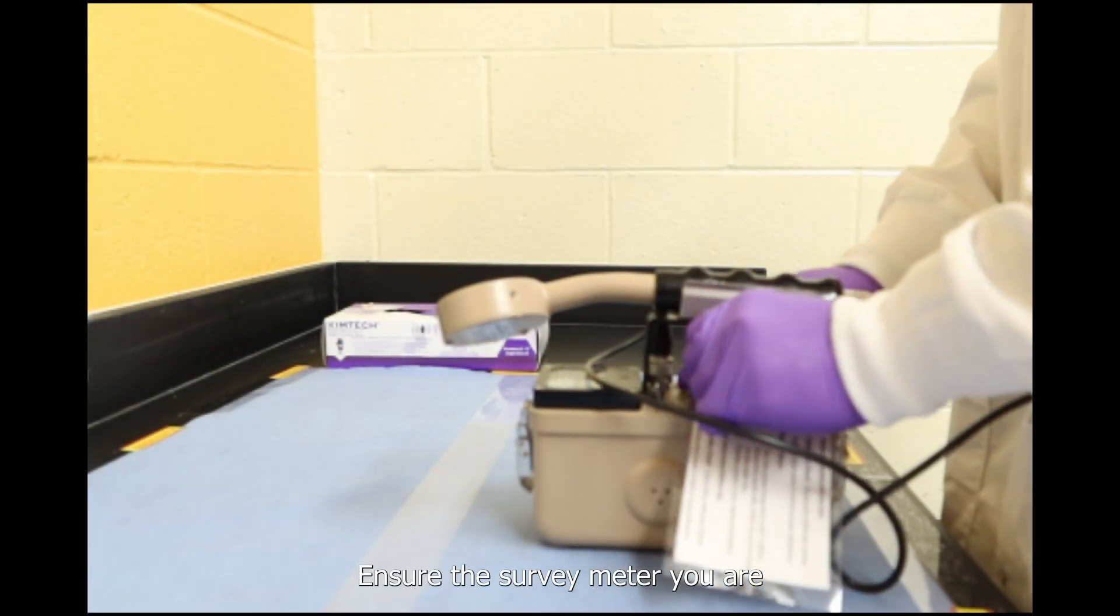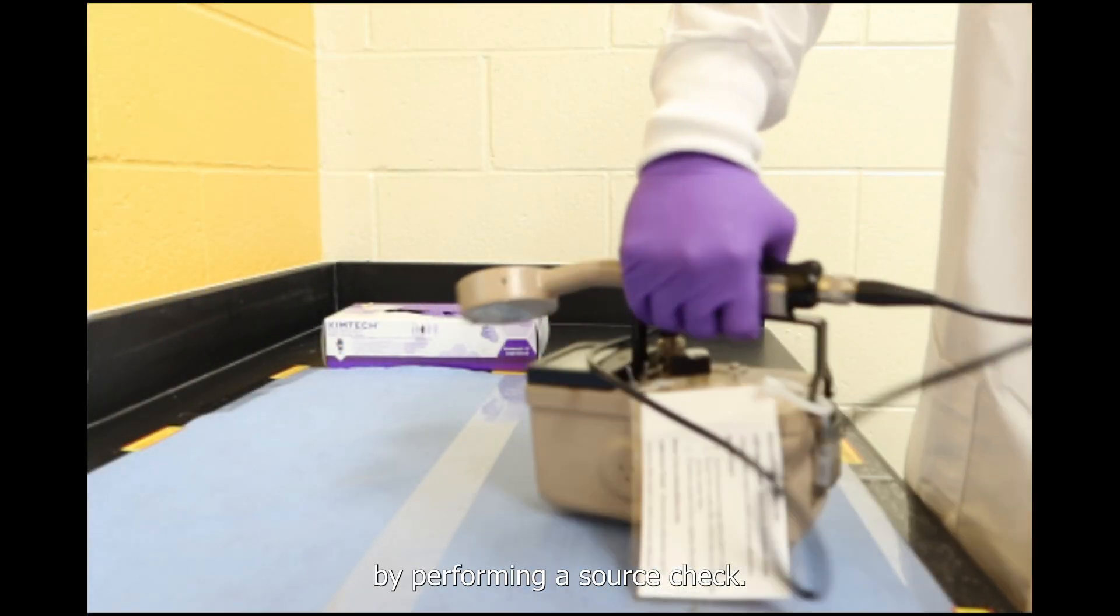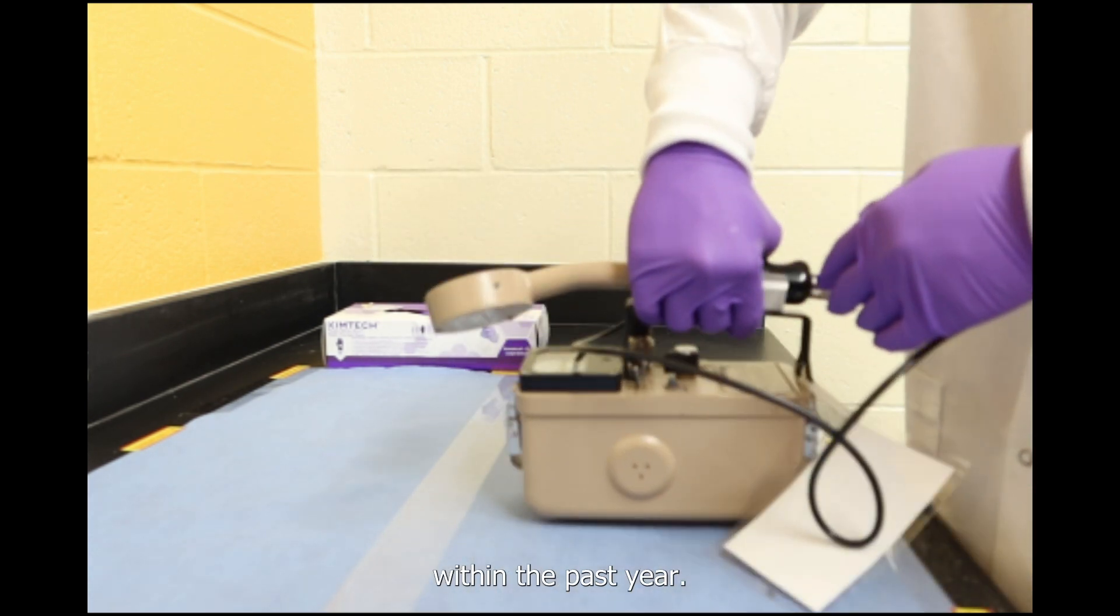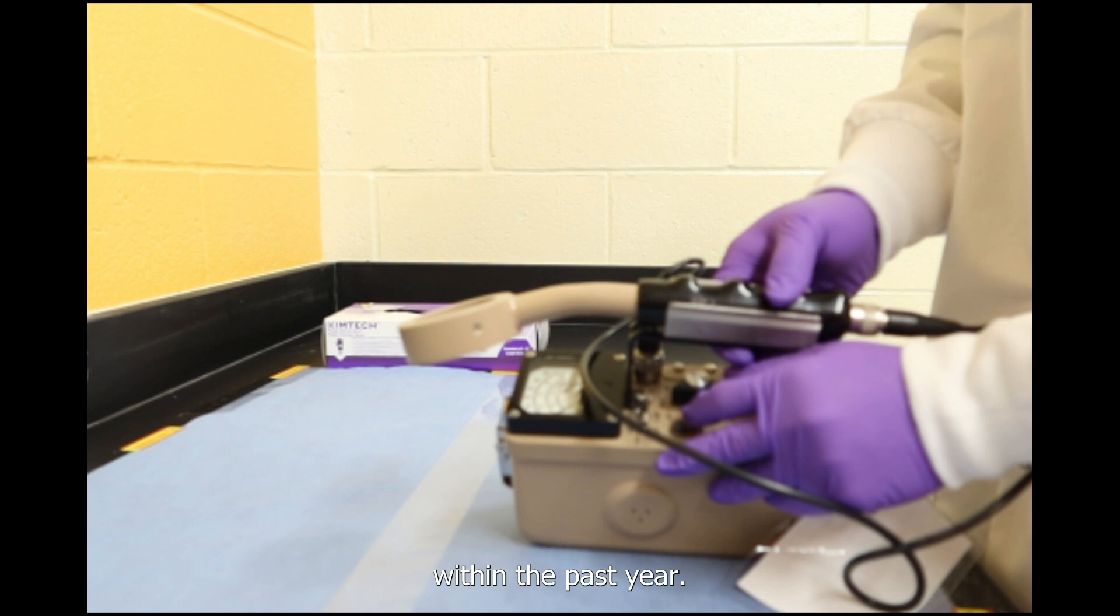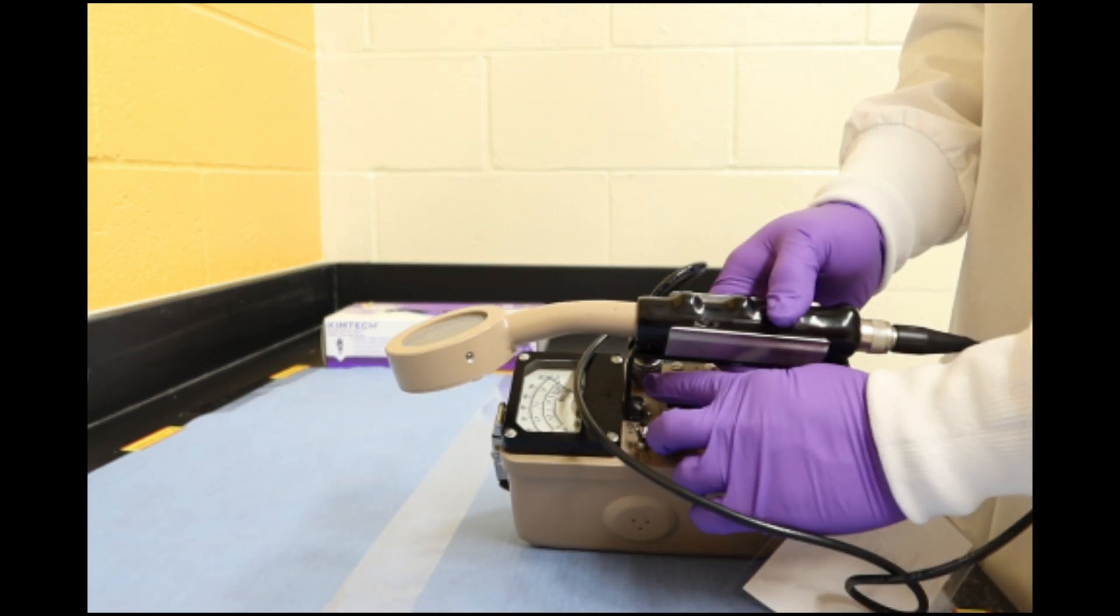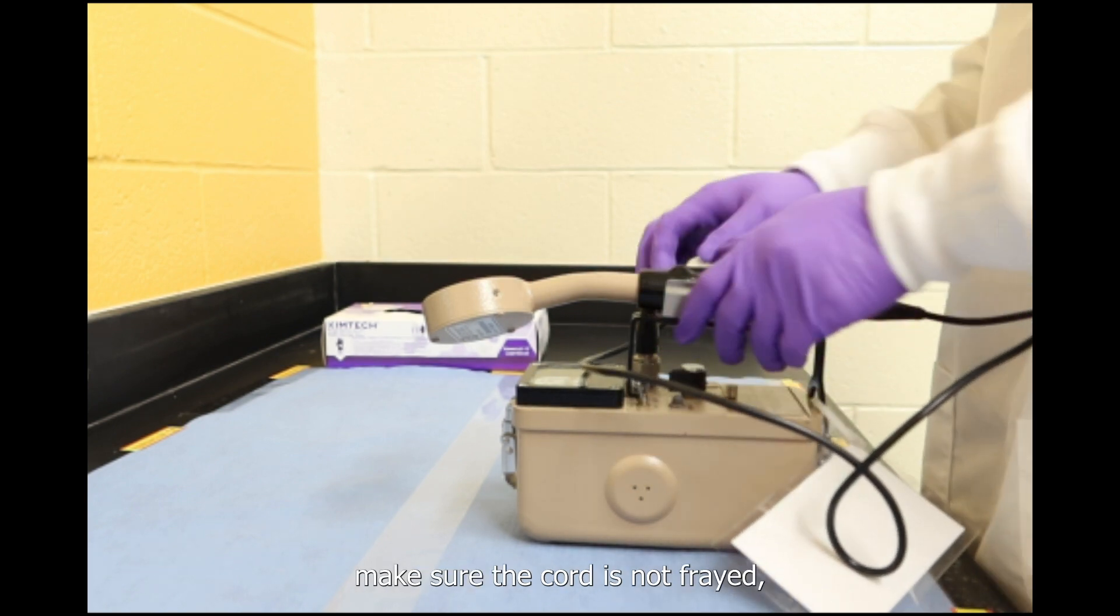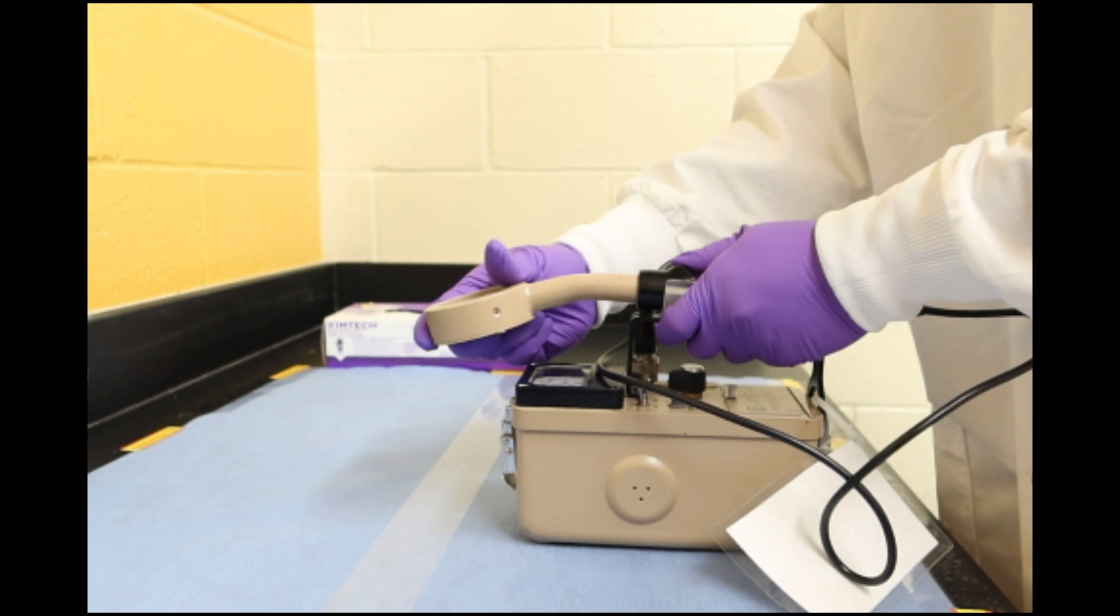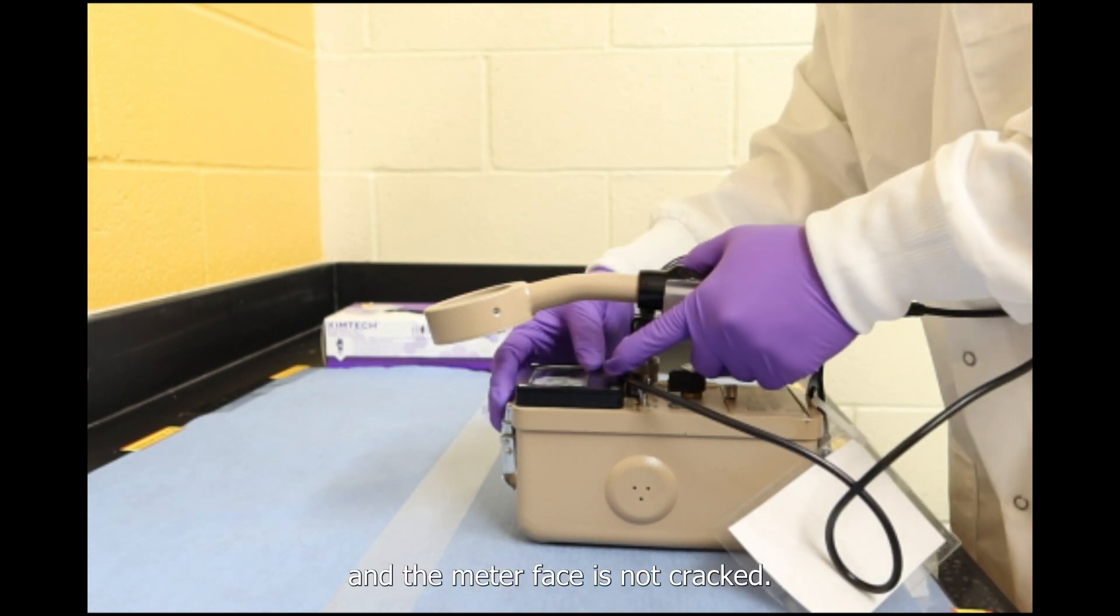Ensure the survey meter you are using is working properly by performing a source check. Verify the meter is calibrated within the past year. Check that the battery is within the acceptable range. Perform an integrity check to make sure the cord is not frayed, the probe surfaces are not damaged, and the meter face is not cracked.